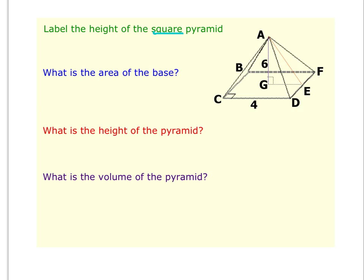The height of this pyramid is the segment that is perpendicular to the base. So 6 is the height of this pyramid. And the area of the base is going to be base times height. But because this is a square, 4 times 4 is 16. Again, the base is this square. And so we have 4 times 4 to get the area of that base.